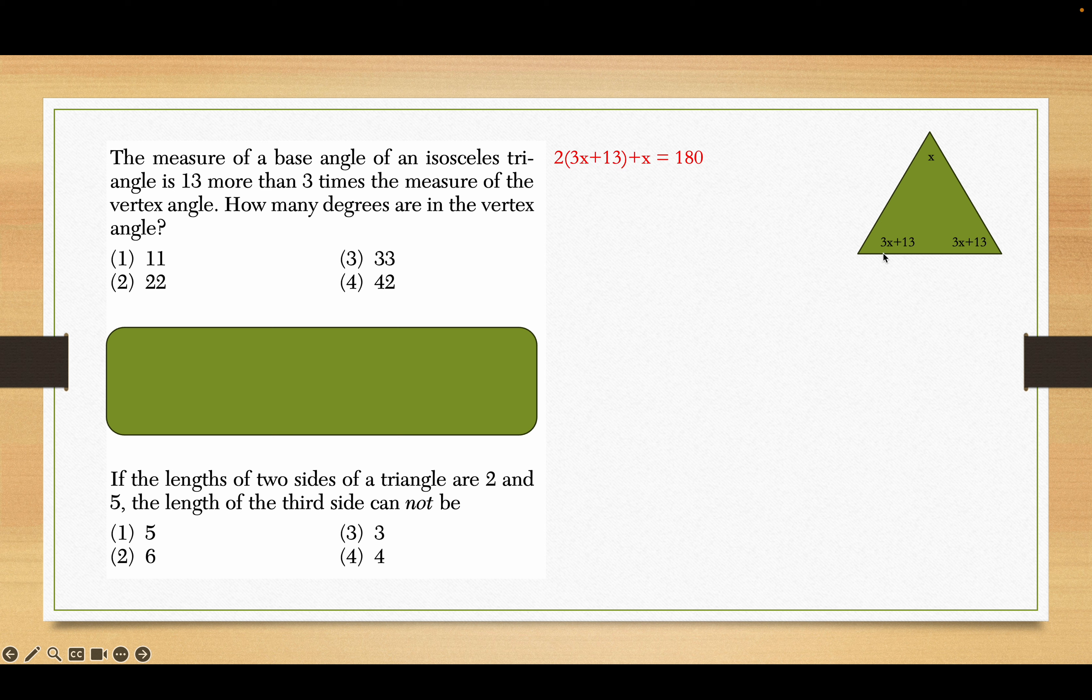So 2 of those 3x plus 13s plus the x at the top of the vertex angle, it's got to add up to 180 because all three angles of a triangle add up to 180. 6x plus 26 plus x is 180. 7x plus 26, 7x is 154 when we subtract 26 from both sides. x is 22, and the vertex angle is x, so it's 22. The base angle would be 3 times 22 plus 13 if you wanted that. That works out to be 79.